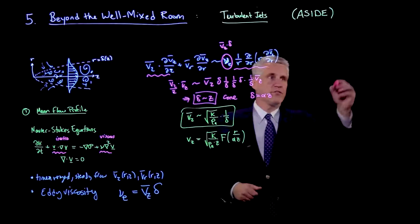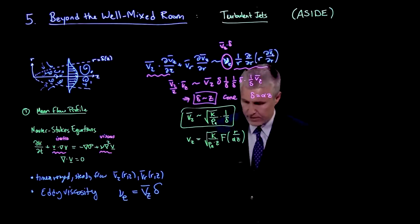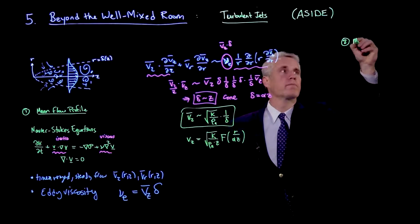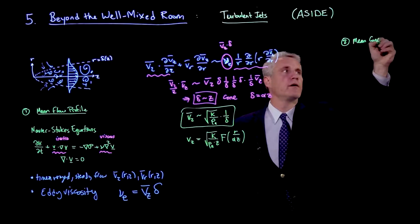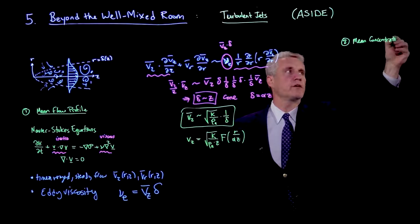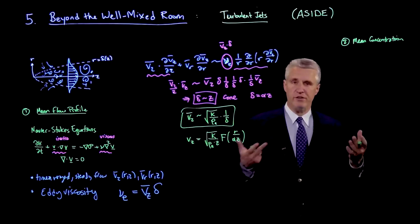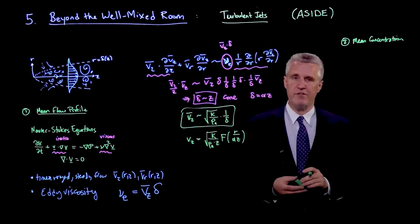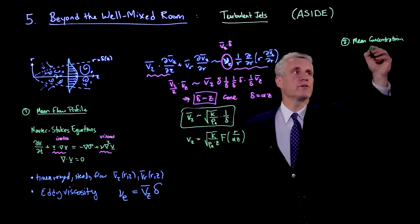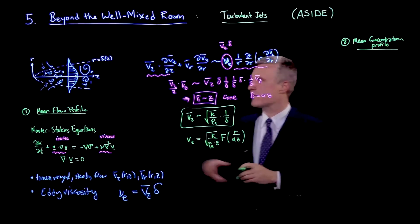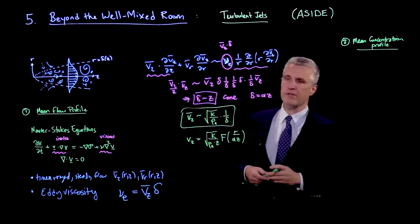The second thing that we're interested in is the mean concentration. And that would be a concentration of, let's say, virions contained in infectious aerosol droplets. So there's a mean concentration profile in the jet, assuming that we are injecting a fluid of a constant concentration at the source of the jet.